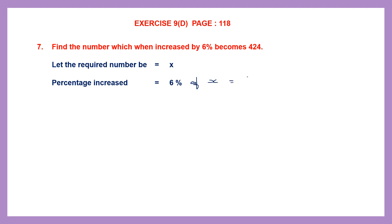That is 6/100 × x. We can reduce this to the lowest term by dividing both by 2: 2 threes are 6 and 2 into 50 is 100. So 3x/50. The percentage increase is 3x/50, meaning x plus this should give us 424.